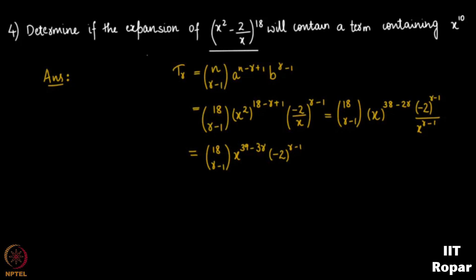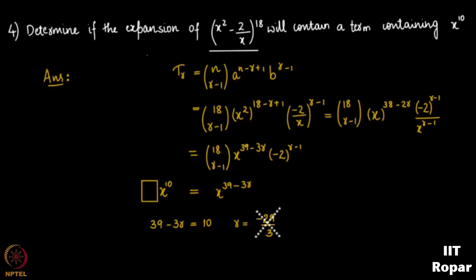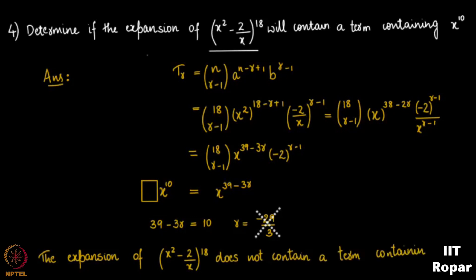If there is a term containing x^10, then the power of x must equal 10: 39 − 3r = 10, which gives r = 29/3. This is not an integer, so it is not possible. Hence the expansion of (x² − 2/x)^18 does not contain a term with x^10.